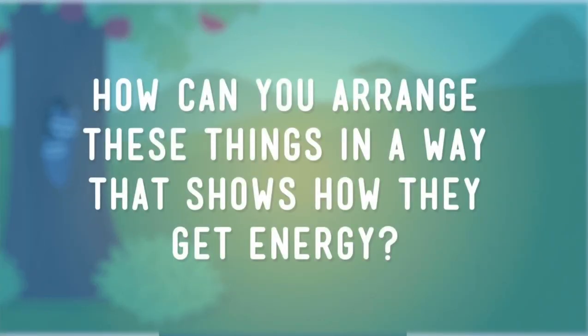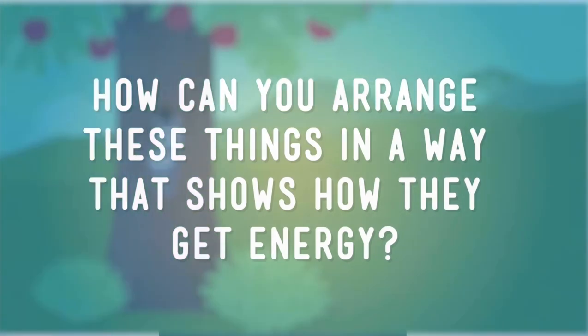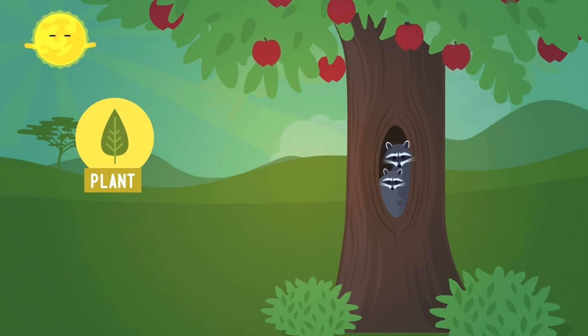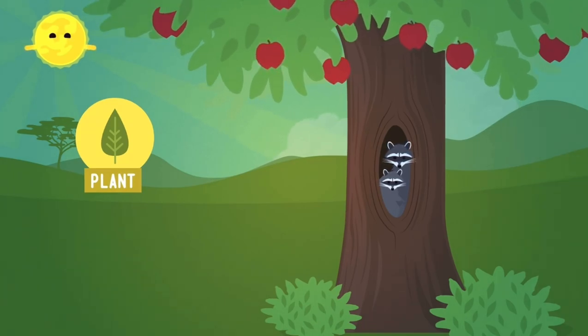How can you arrange these things in a way that shows how they get energy? Well, first we know that the apple tree doesn't really eat anything. It's a plant, so it can take the sun's energy shining on its leaves, plus some air and water, and make sugar.